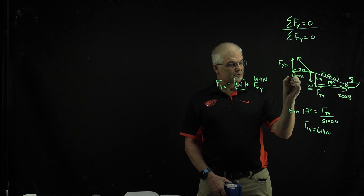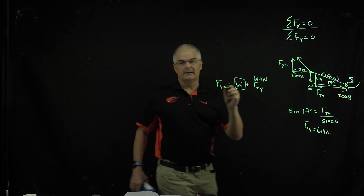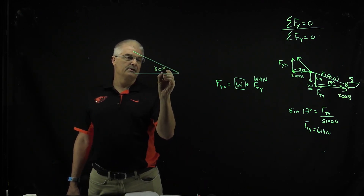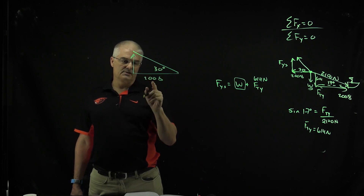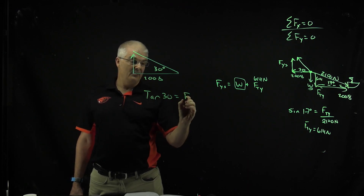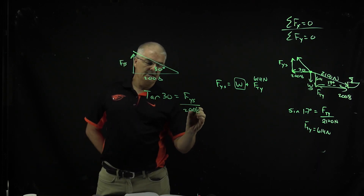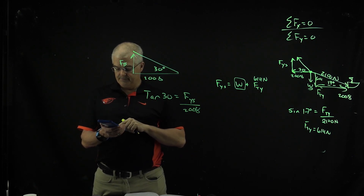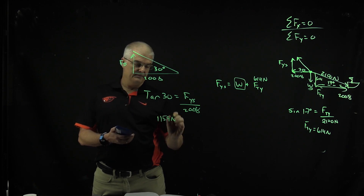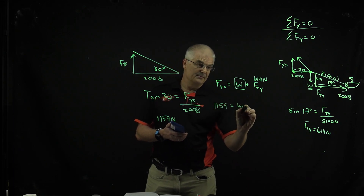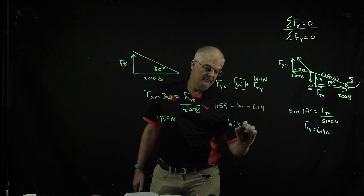If I know the x-force is 2008, I want to find FYS — the y-force of the sail. I'll redraw this triangle: if this is 30 degrees and we know this number is 2008, I want to find the opposite side. This is opposite over adjacent, so tan(30°) = FYS over 2008. Taking tangent of 30° times 2008 gives 1159 newtons. So I have: 1159 = W + 614. Therefore, 1159 minus 614 gives a weight of 545 newtons. Solved.